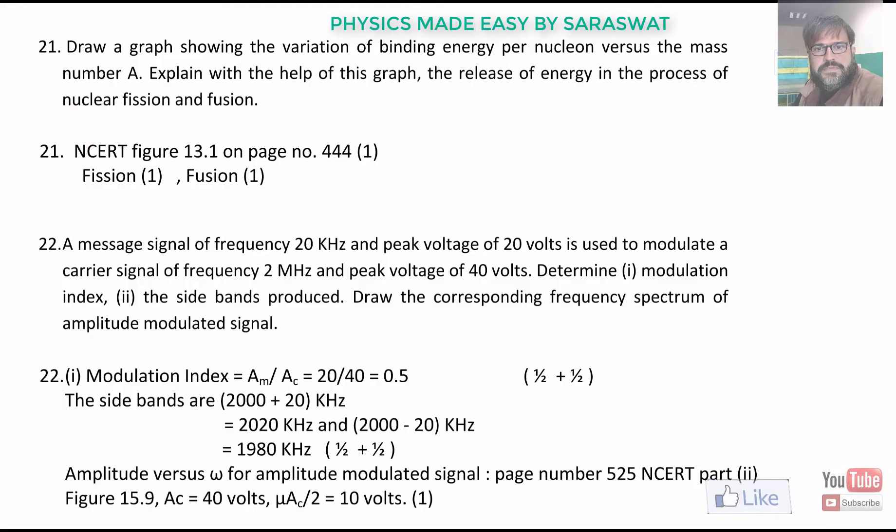Question number 21. Draw a graph showing the variation of binding energy per nucleon versus mass number A. This is the graph which we have already done. Explain with the help of this graph the release of energy in the process of nuclear fission and fusion. This will be the fission, this will be the fusion. This is explained in our videos and in the NCERT on these pages.